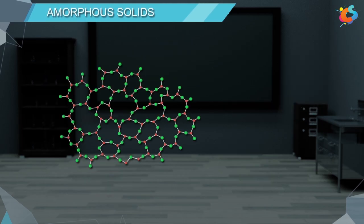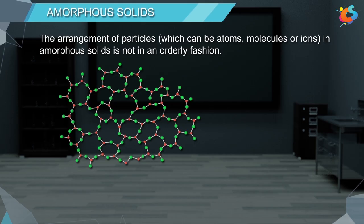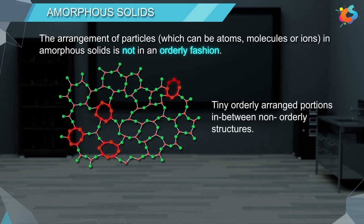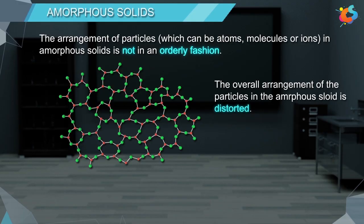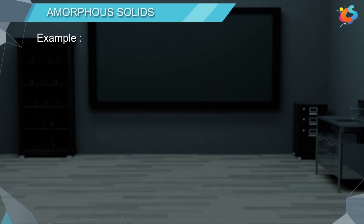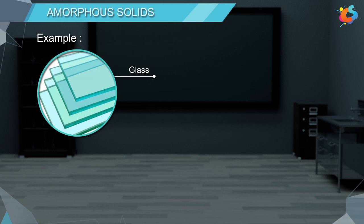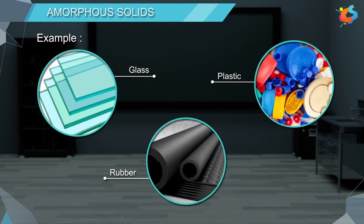The arrangement of particles in amorphous solids is not in an orderly fashion. Sometimes in amorphous solids, we can find a few tiny orderly arranged portions in between non-orderly structures. Since they are very small in number, they cannot influence the overall structure. Due to this, the overall arrangement of particles in amorphous solids is distorted. Examples of amorphous solids are glass, rubber, and plastics, etc.